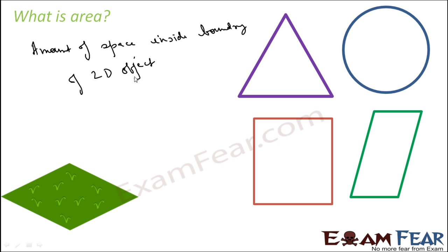When you talk about two-dimensional object, the popular figures which are known to us are triangle, circle, square, then rectangle, parallelogram, or even any figure, something like this. This is also a two-dimensional object, any figure.